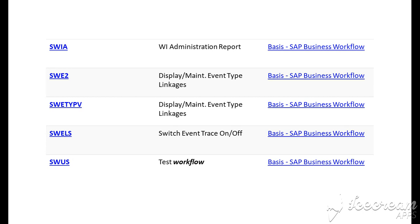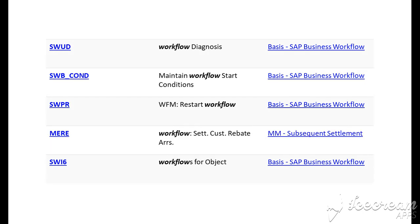SW US is for test workflow. SW UD is for workflow diagnosis. SWP_COND is for maintain workflow start conditions. SW PR is for restart the workflow.